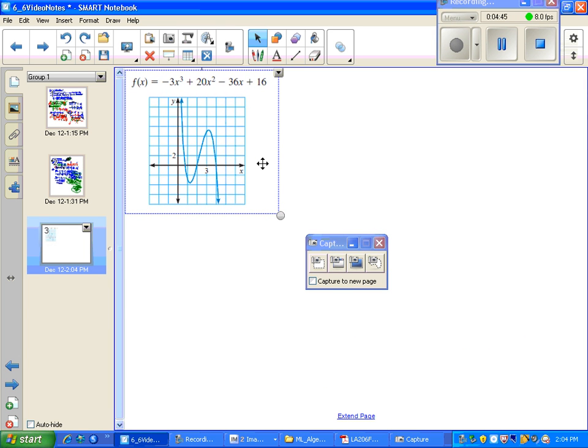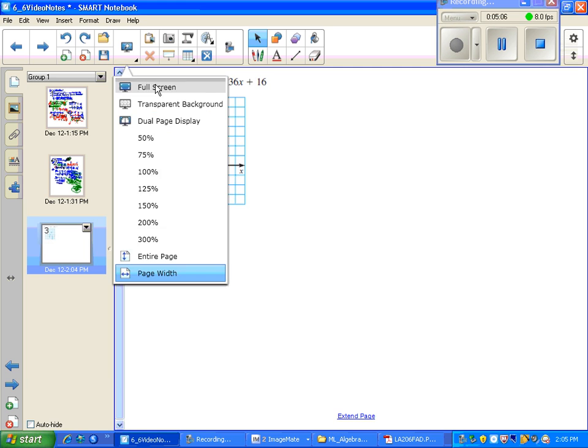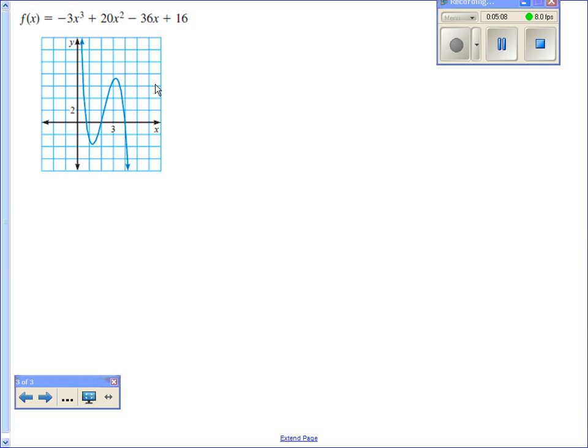Okay, so this one, this one's number 46. So this is asking, use the graph to shorten the list of possible rational zeros, then find all the real zeros of the function. So this is kind of a similar process as well. So we want to list all the possible rational zeros, okay? So number one, what are the possible zeros? Possible rational zeros.